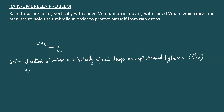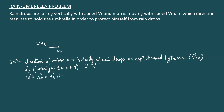Recall the notation: v12 is the velocity of body 1 with respect to body 2. Similarly, vrm is the velocity of rain with respect to man. And just as v12 = v1 − v2, we have vrm = vr − vm, which can also be written as vr plus negative of vm. Triangle law or parallelogram law can both be used here.